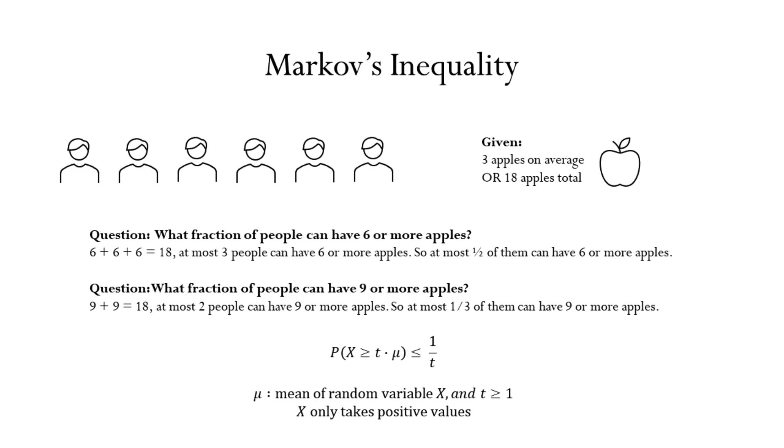We write this in the following way. The probability that a random variable X takes a value more than t times its mean is at most one over t. In the above examples, we saw six, which is two times the mean, and nine, which is three times the mean. t can also be any real number that is at least one.